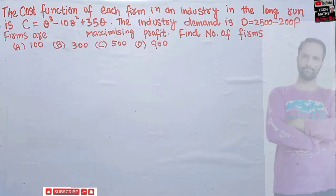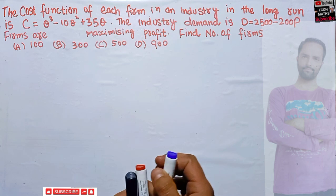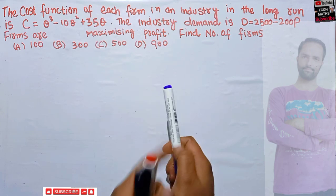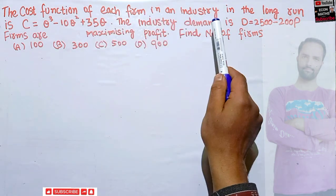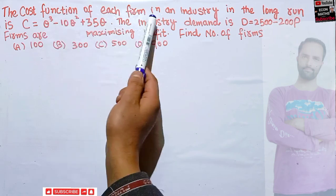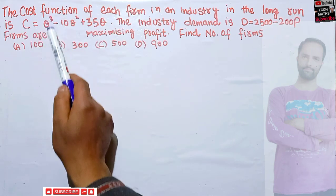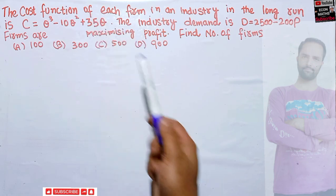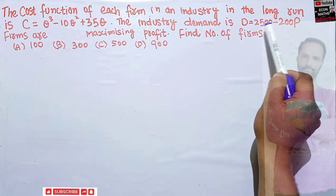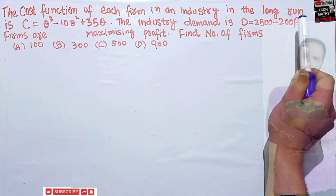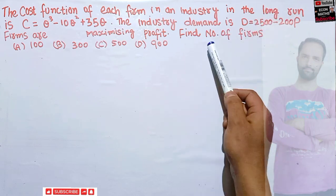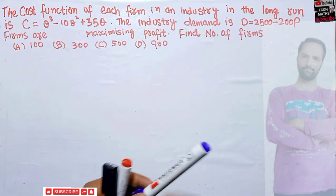Hi, this is Halal. In this video on the mathematical economics series, we will solve another problem asked by a viewer regarding finding the number of firms in perfect competition. The question is: the cost function of each firm in an industry in the long run is given, and the industry demand is given. Firms are maximizing profit. Find the number of firms in the industry.